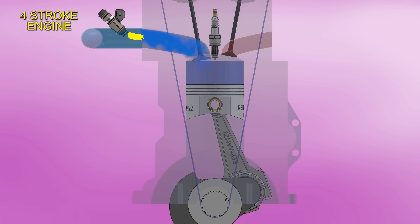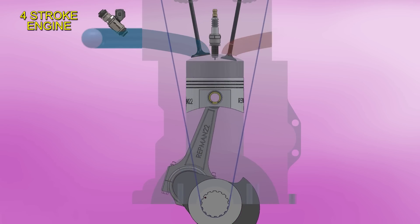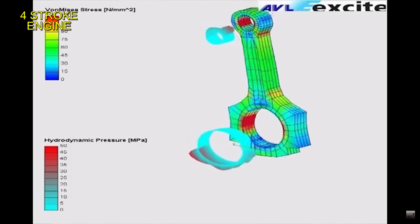The connecting rod operates at full load in the combustion stroke. Then in the other three strokes, the load is low, so in those moments, it is found to be oversized.